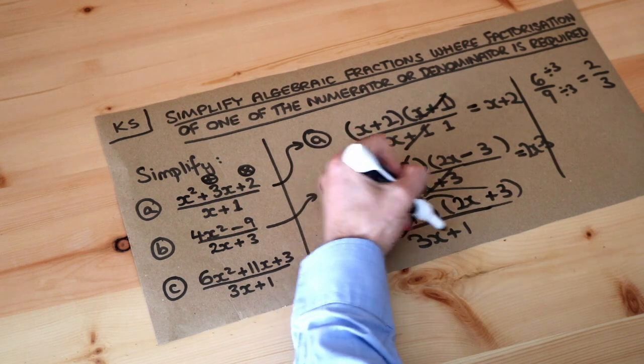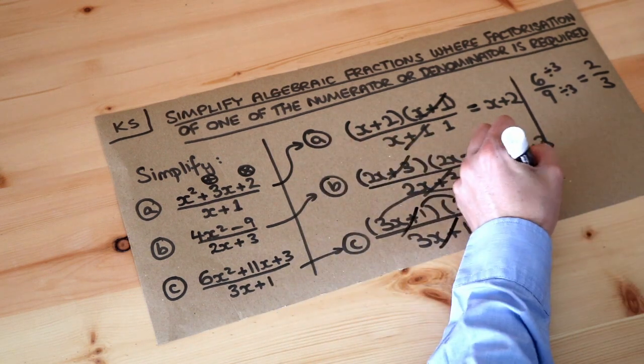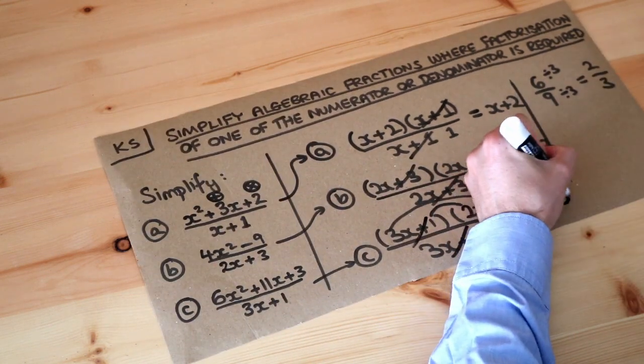Now again look, 3x plus 1 common top and bottom, and we're just left with 2x plus 3, which is the final answer.